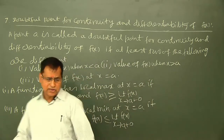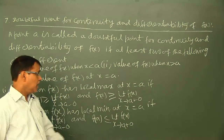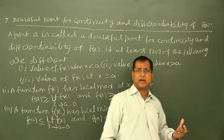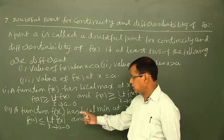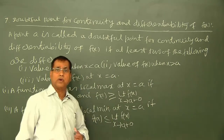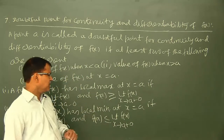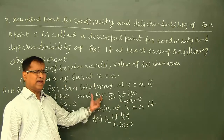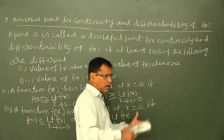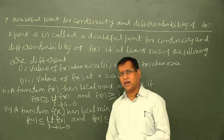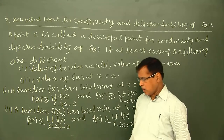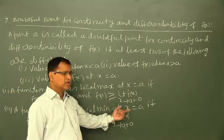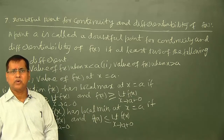ٹھیک اسی طرح، f(x) کا A پر local minimum ہوگا جب A پر function کا value، f(x) کے left hand limit extending to A اور f(x) کے right hand limit extending to A — دونوں سے less than or equal to ہو۔ اس case میں ہم left hand limit اور right hand limit سے compare کرتے ہیں: اگر f(A) دونوں limits سے less than or equal to ہے تو A پر function کا value local minimum ہے۔